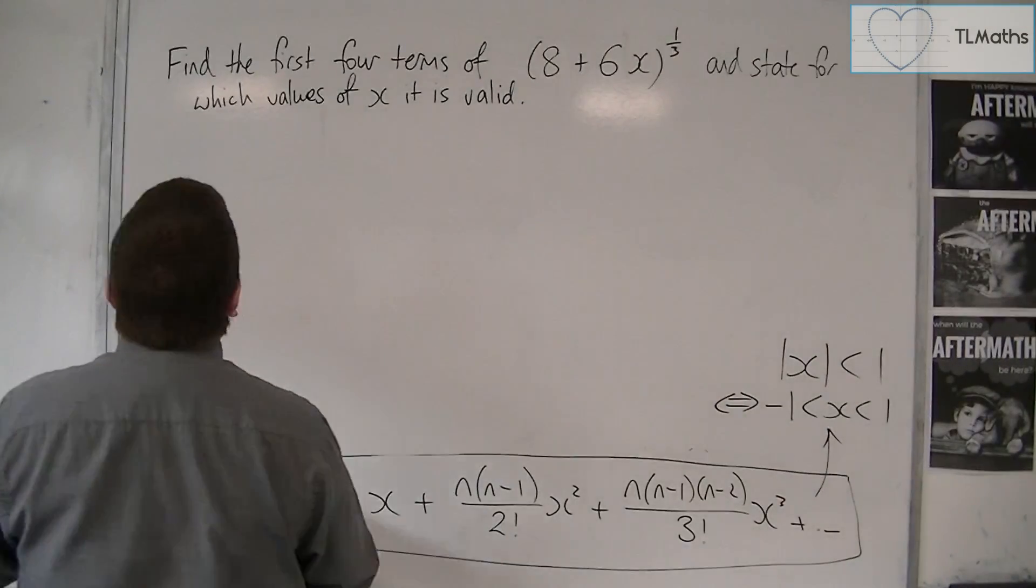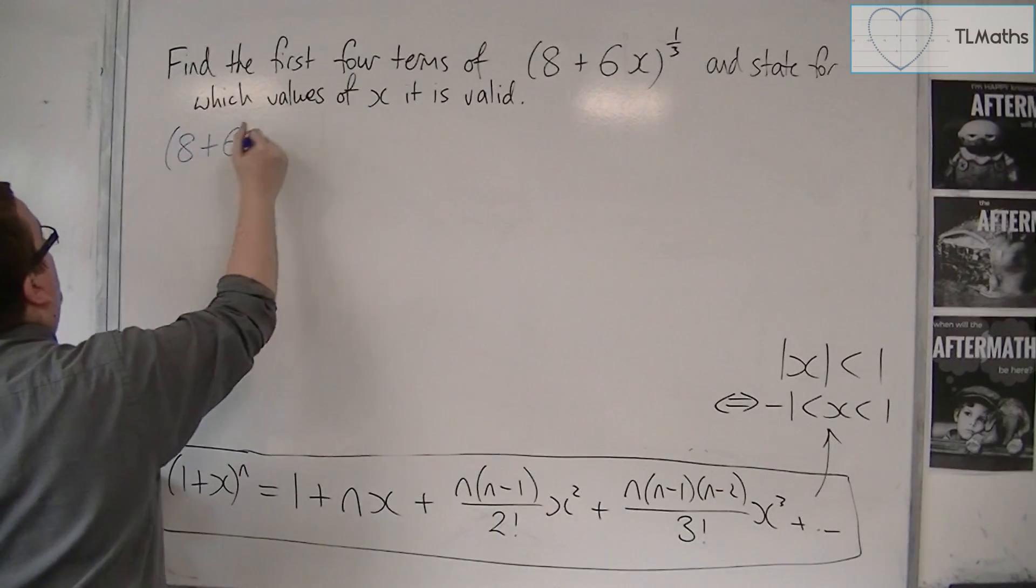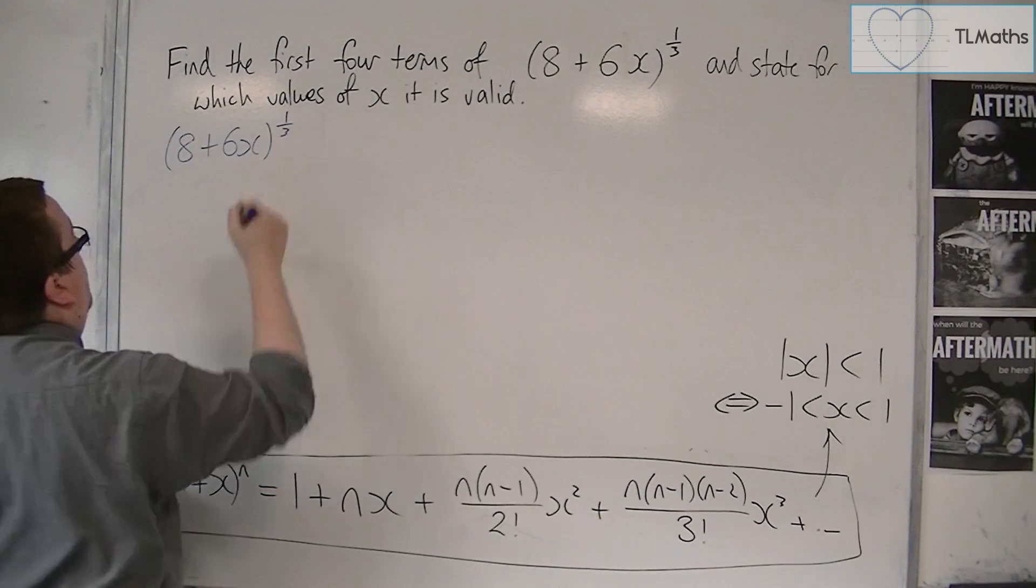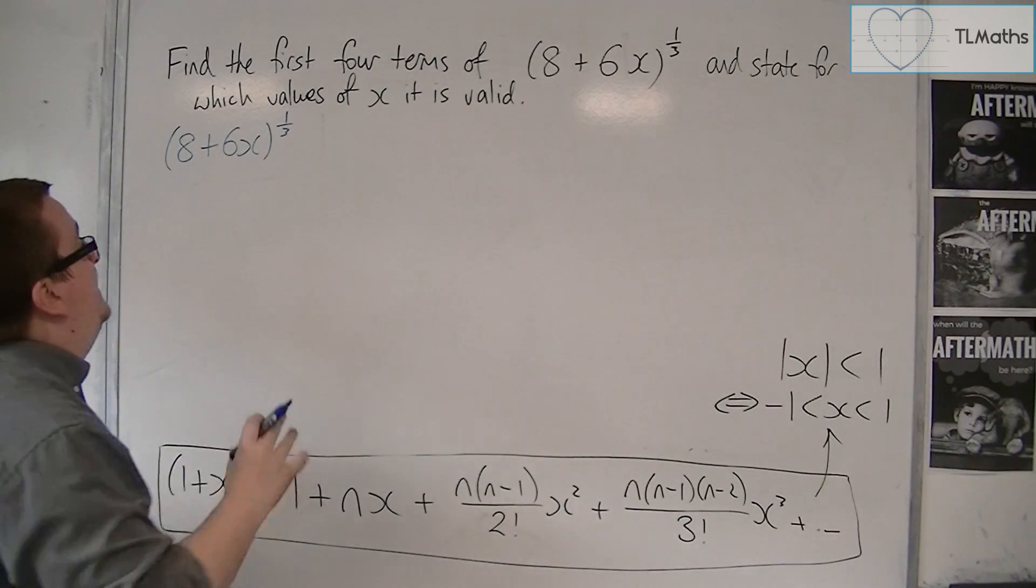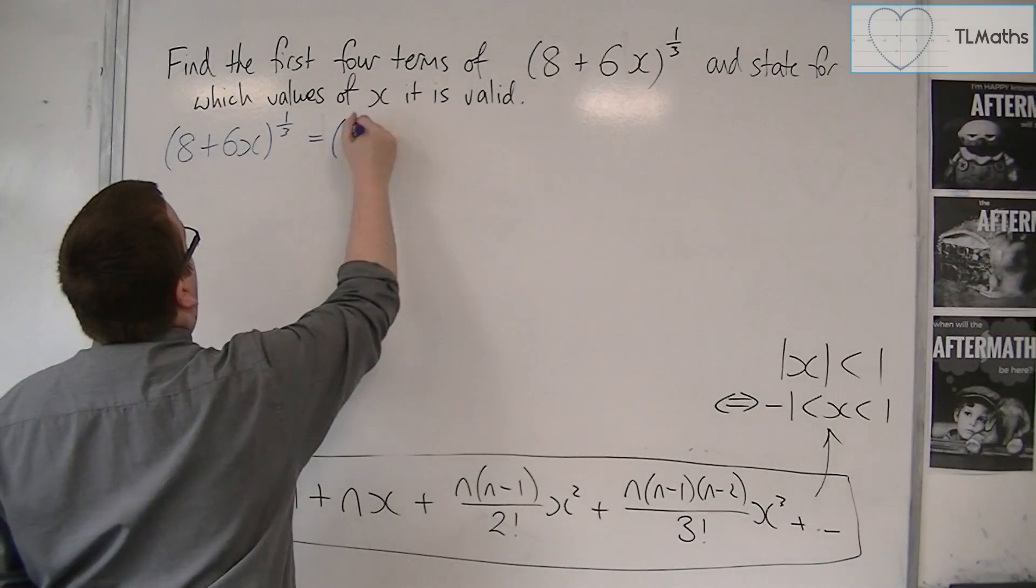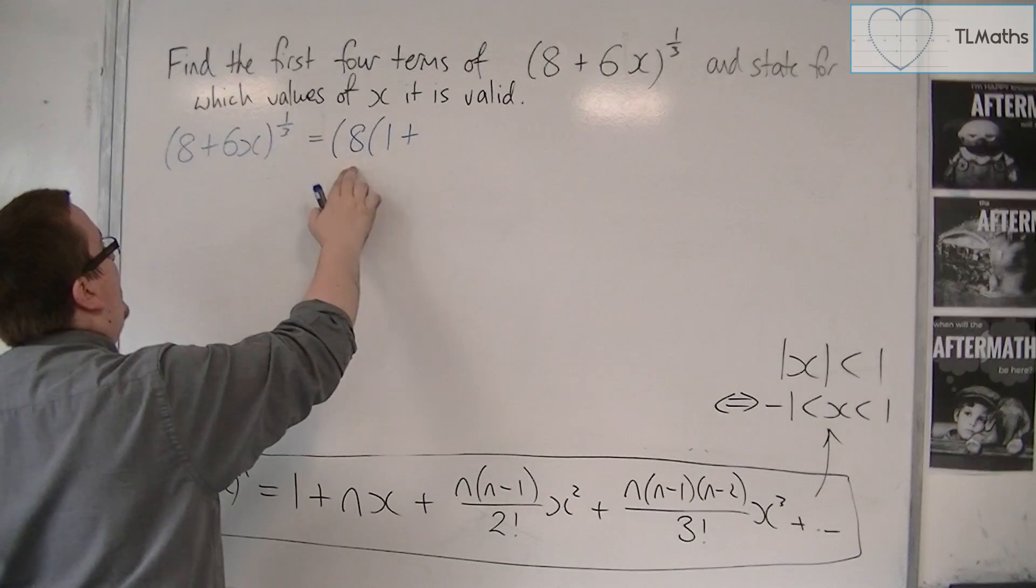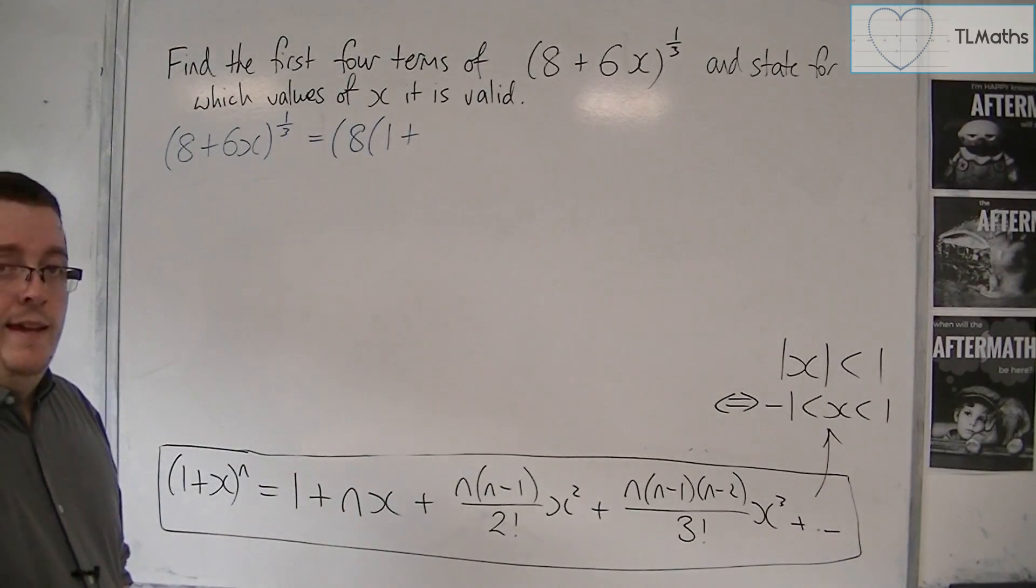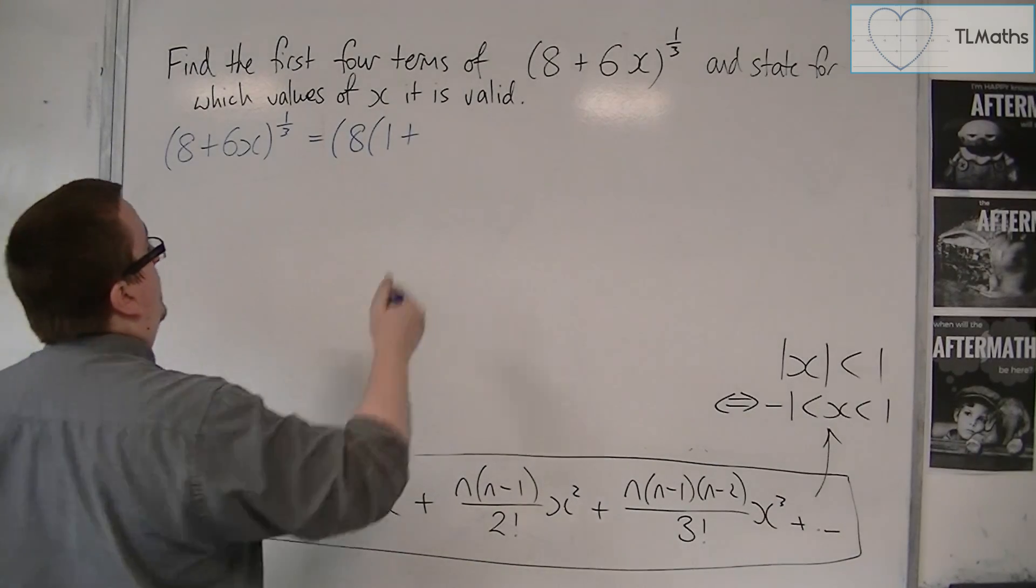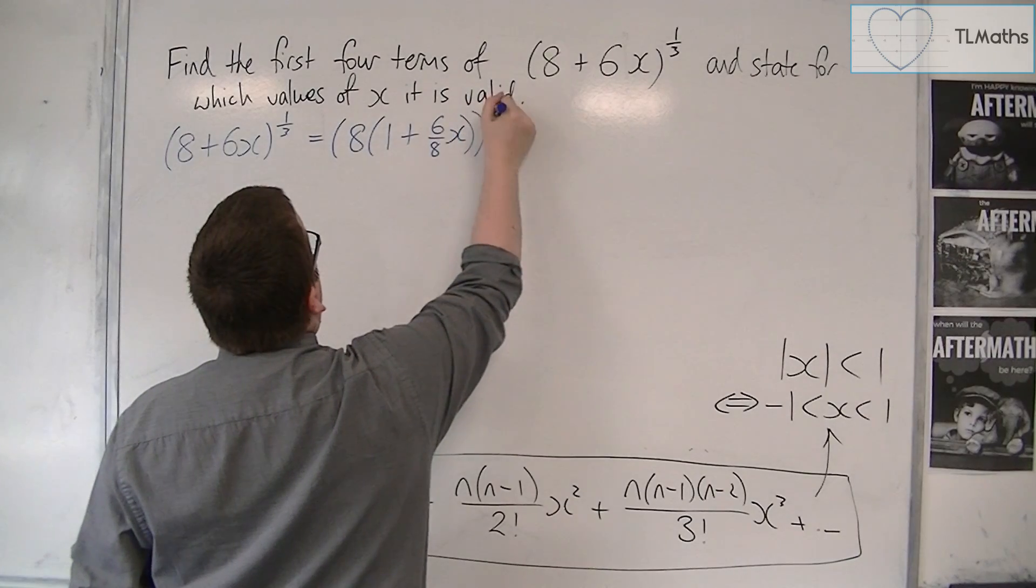The first thing I would notice is that (8 + 6x)^(1/3) is not of the form 1 plus or 1 minus, so I'm going to need to factor that 8 out. If I do it into a single bracket first, I'd have 1 plus 8 lots of, well I'm dividing that 6x by 8 here, so 6/8, which I could write as 6/8 for the moment and I'll simplify it in a bit.